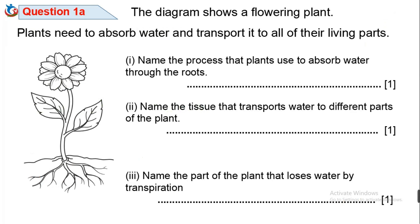Question 1a: The diagram shows a flower. In plants, plants need to absorb water and transport it to all of their living parts. Question 1a1: Name the process that plants use to absorb water through the roots. The process by which plants absorb water through the roots is called osmosis — the natural movement of water molecules across a semi-permeable membrane.